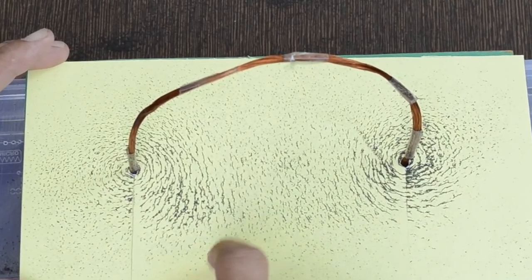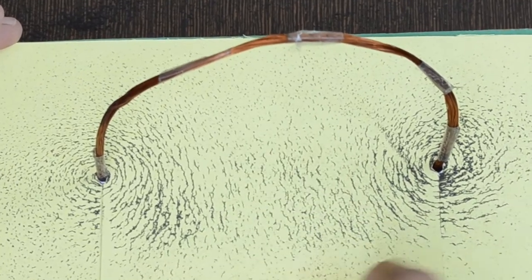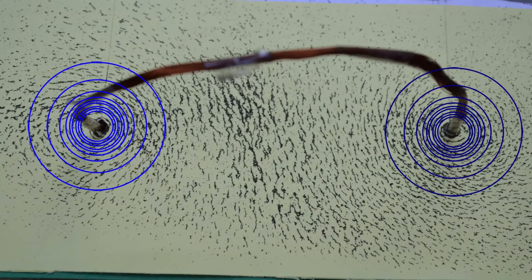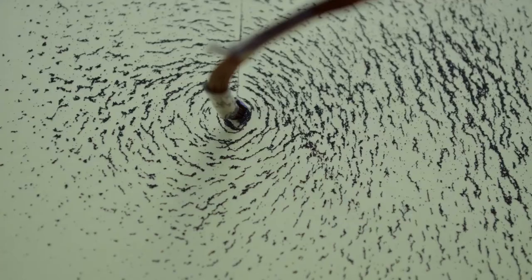When current is flowing through the conductor, after gently tapping, we can see concentric circles near two areas. This is similar to field lines around a straight conductor.